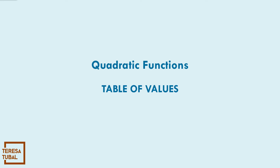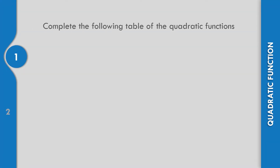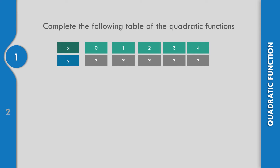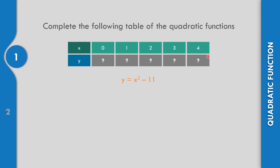Let us identify the table of values of the quadratic function and complete the table. We will replace the value of x — 0, 1, 2, 3, and 4 — into the given quadratic function y equals x squared minus 11. First, replace x by 0: y equals 0 squared minus 11. That is 0 minus 11, which equals negative 11. So the value of y is negative 11.